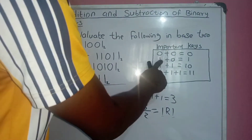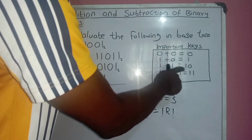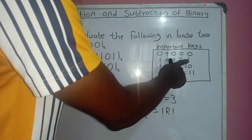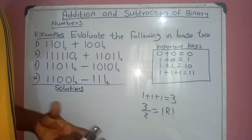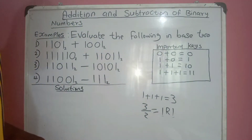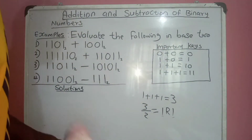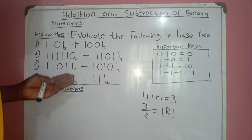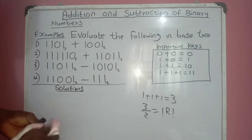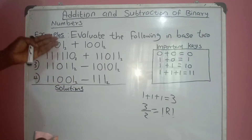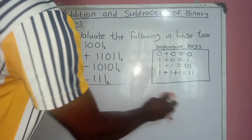So 1 plus 0 is 1, 0 plus 1 is 1, and 0 plus 0 is 0. The keys are quite clear, and they are going to help us to be able to do these calculations. Now let's get started.